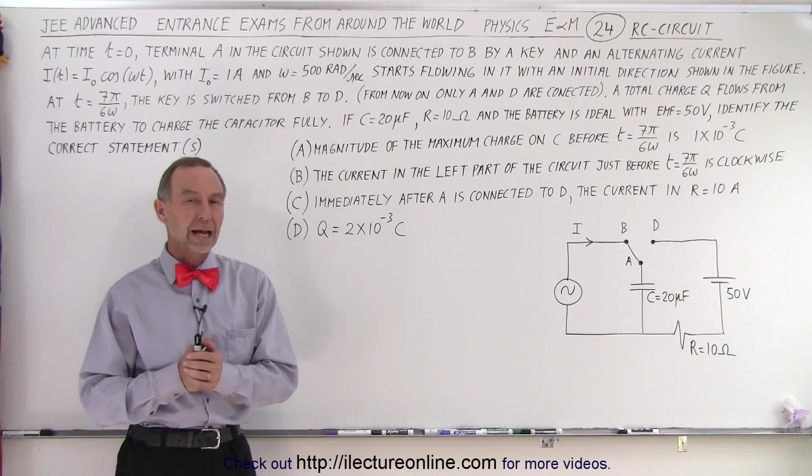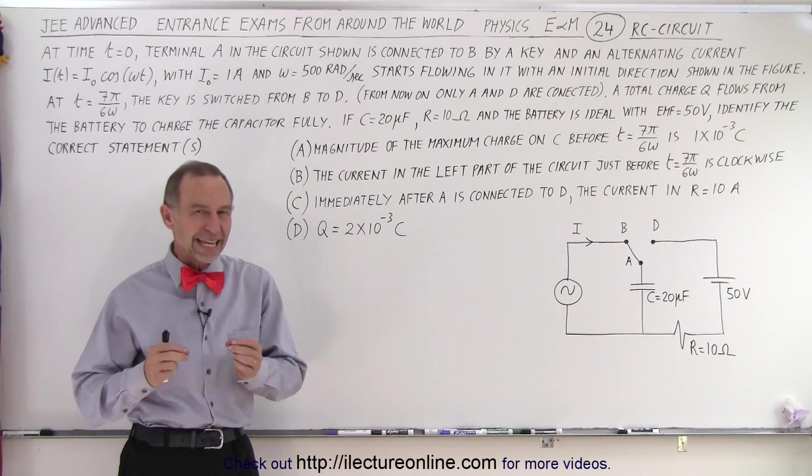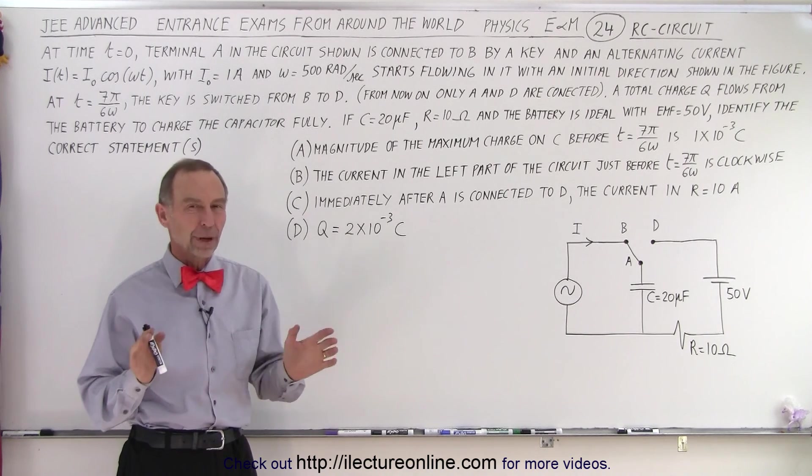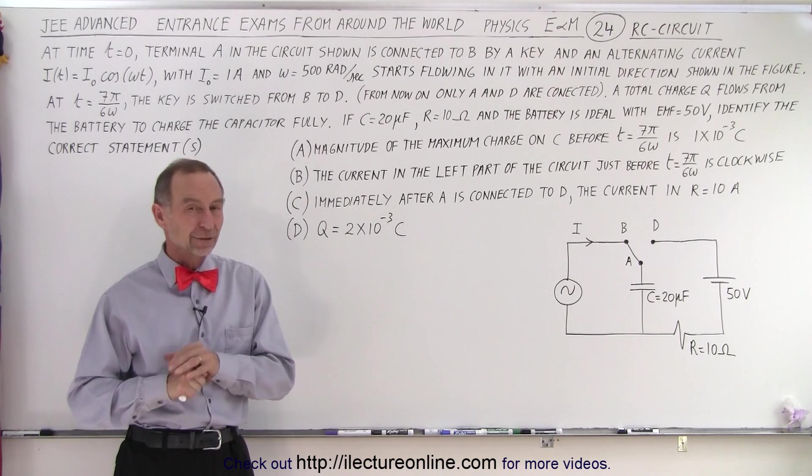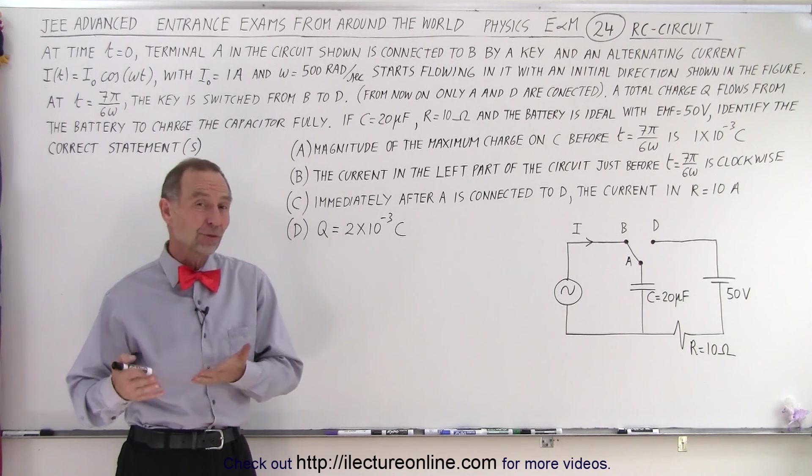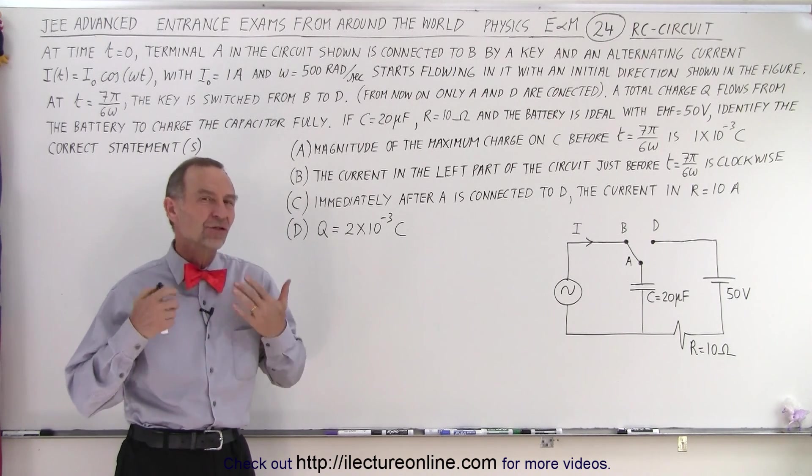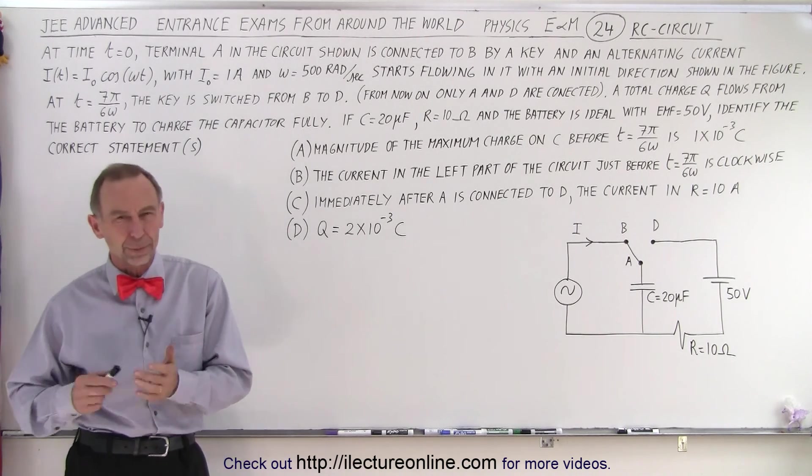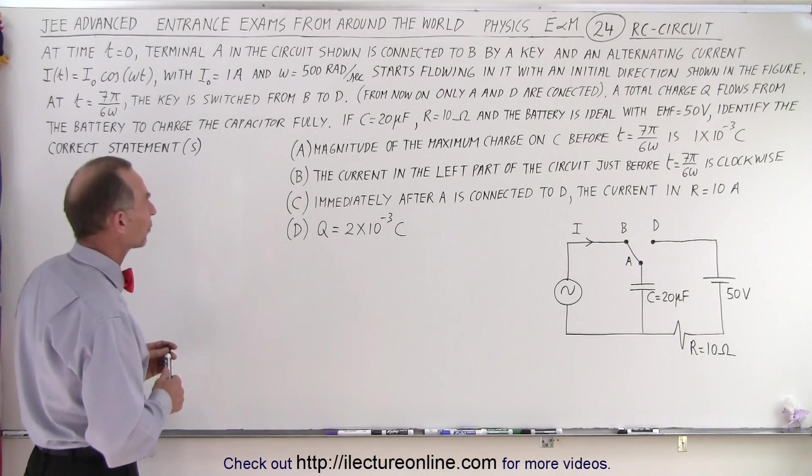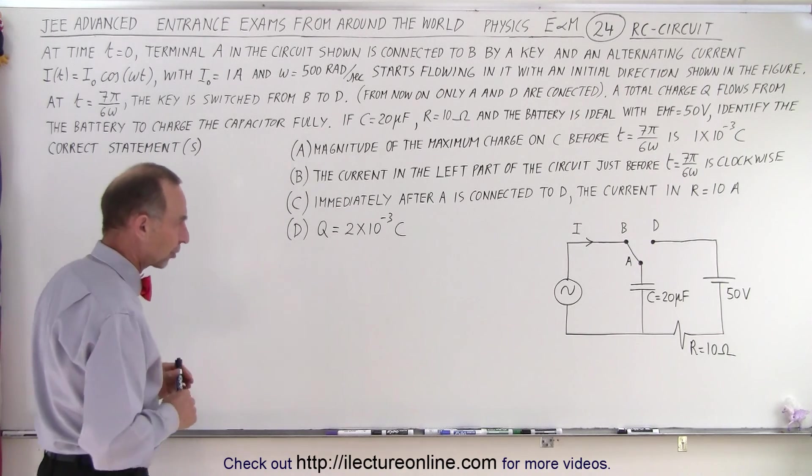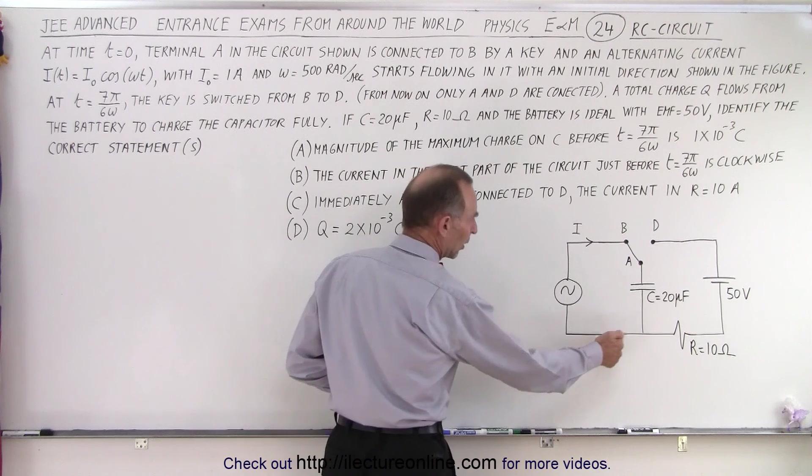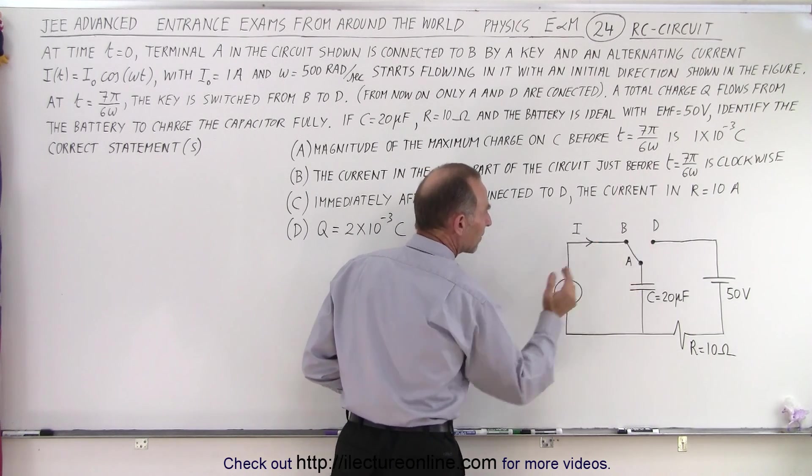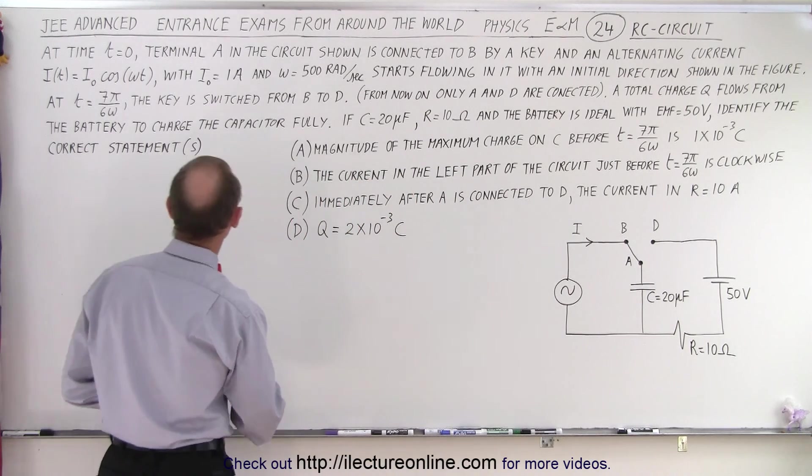Welcome to our lecture online. On this particular problem from the JEE advanced test, there's one of the answers when I read it, I wasn't quite sure what they were asking. And of course, that's the trouble for students taking the test. They don't always understand what the author of the problem is trying to ask. So let's read the problem and see why I have this doubt. It deals with an RC circuit and a switch. Notice that we start out with the circuit with the switch from A to B, and then the switch gets changed from A to D.